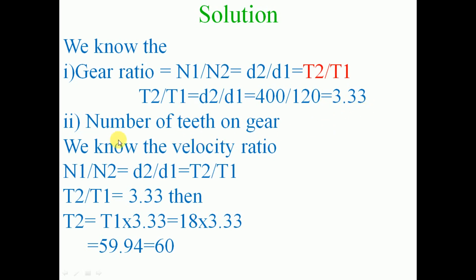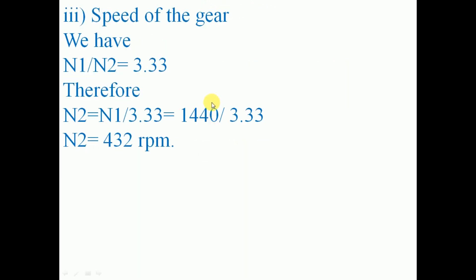Second, we find the number of teeth on the gear. Using the velocity ratio n1/n2 = d2/d1 = t2/t1, and since the gear ratio is 3.33, we get t2 = t1 × 3.33 = 18 × 3.33 = 59.94, which is approximately equal to 60 teeth on the gear.